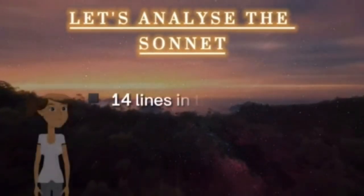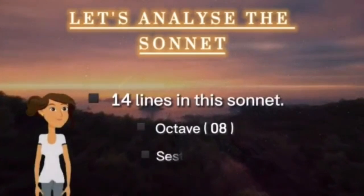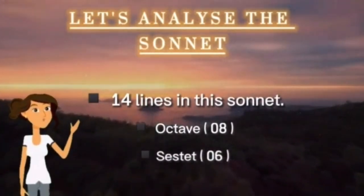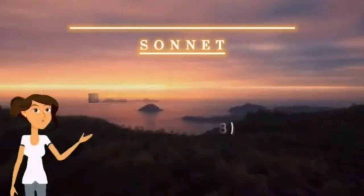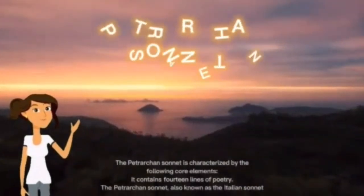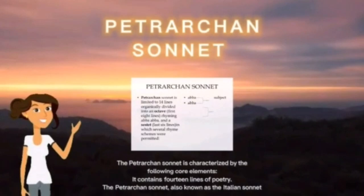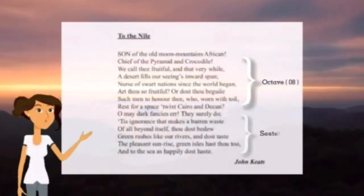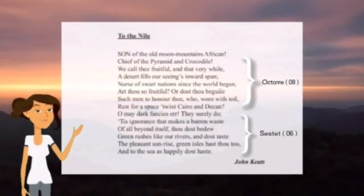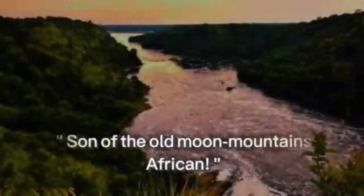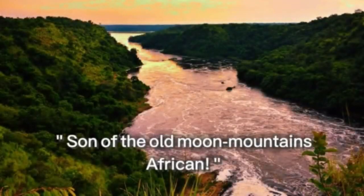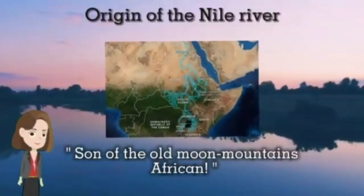The poem has 14 lines comprised of an octave and a sestet, meaning it has been composed in the Petrarchan sonnet style.